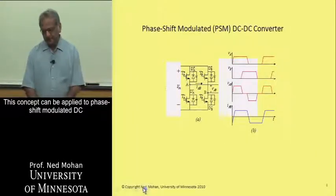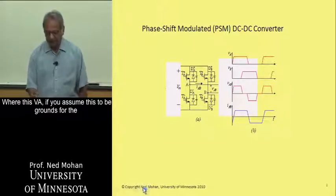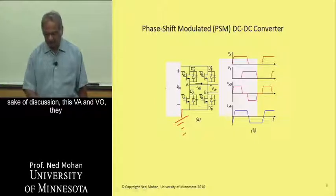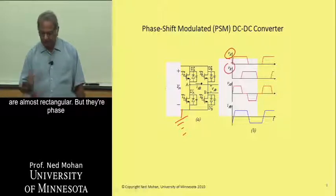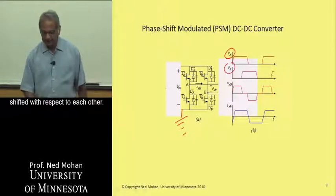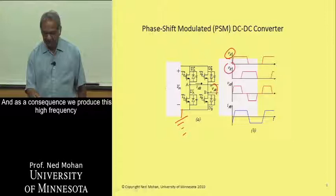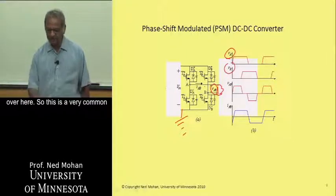This concept can be applied to phase shift modulated DC to DC converters, where this VA, if you assume this to be ground just for the sake of discussion, this VA and VO, they are almost rectangular, but they are phase shifted with respect to each other, and as a consequence we produce this high frequency AC voltage across the primary of this transformer over here.